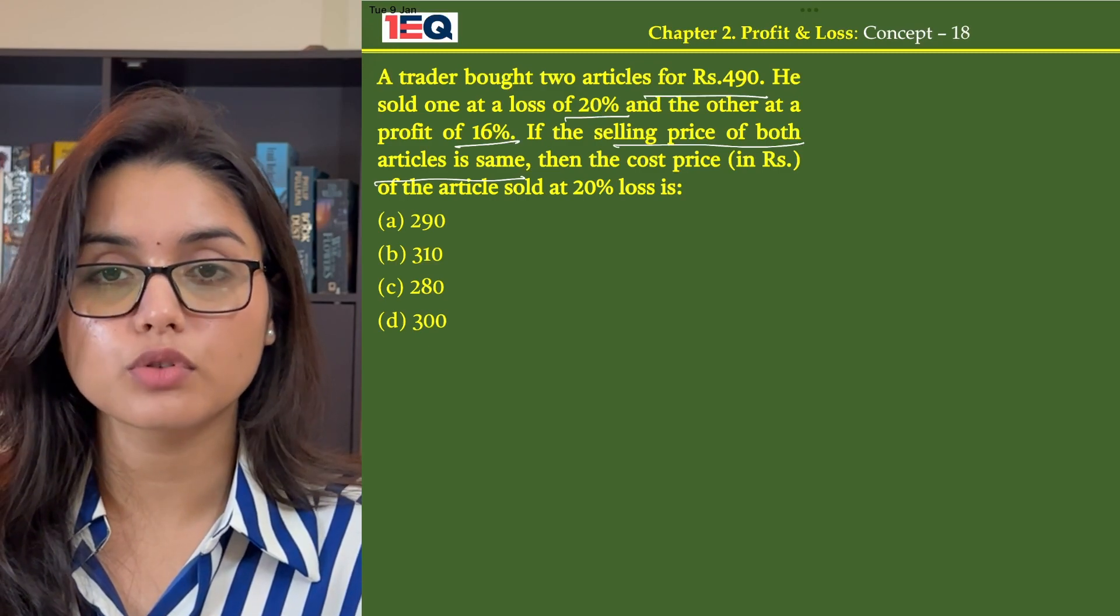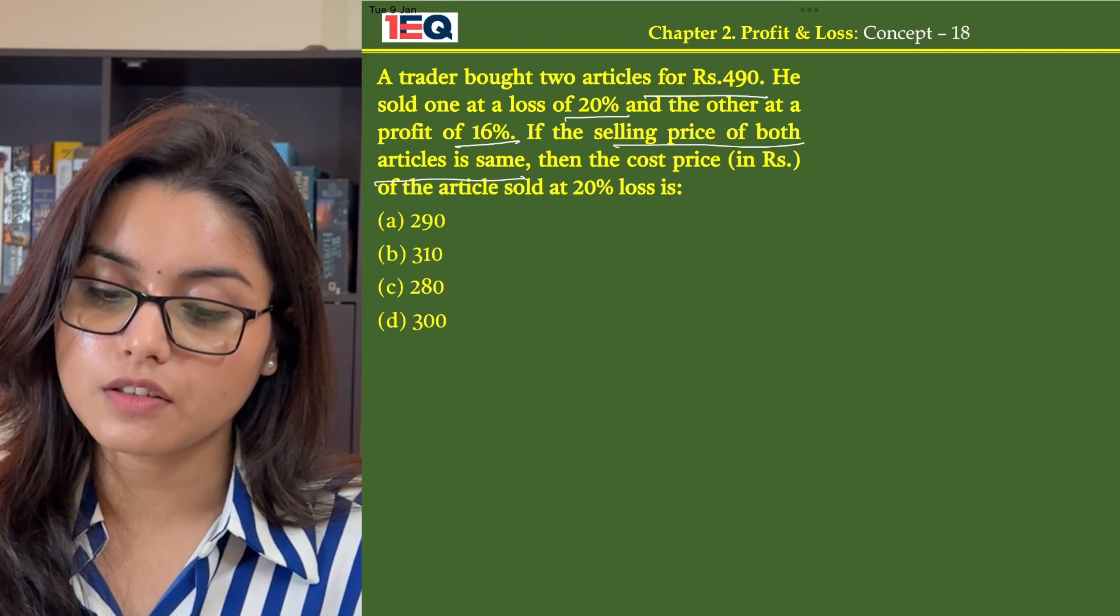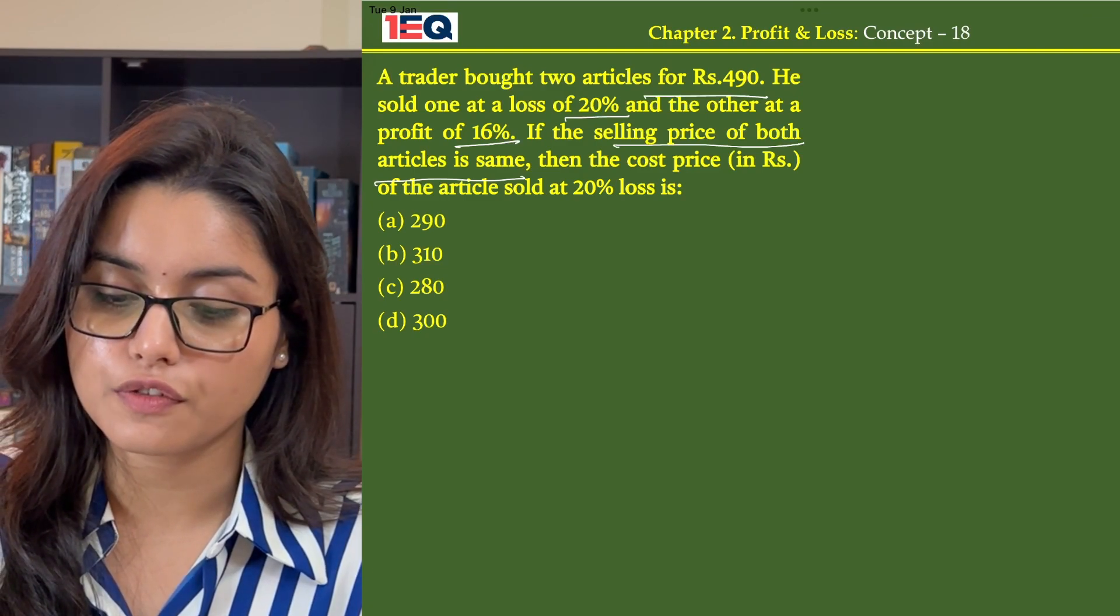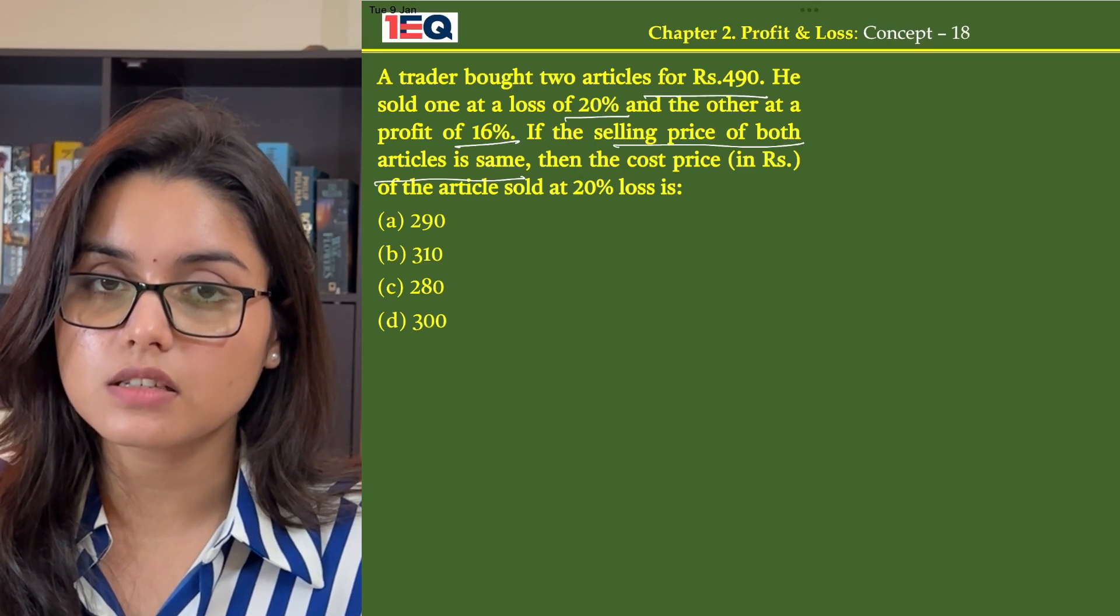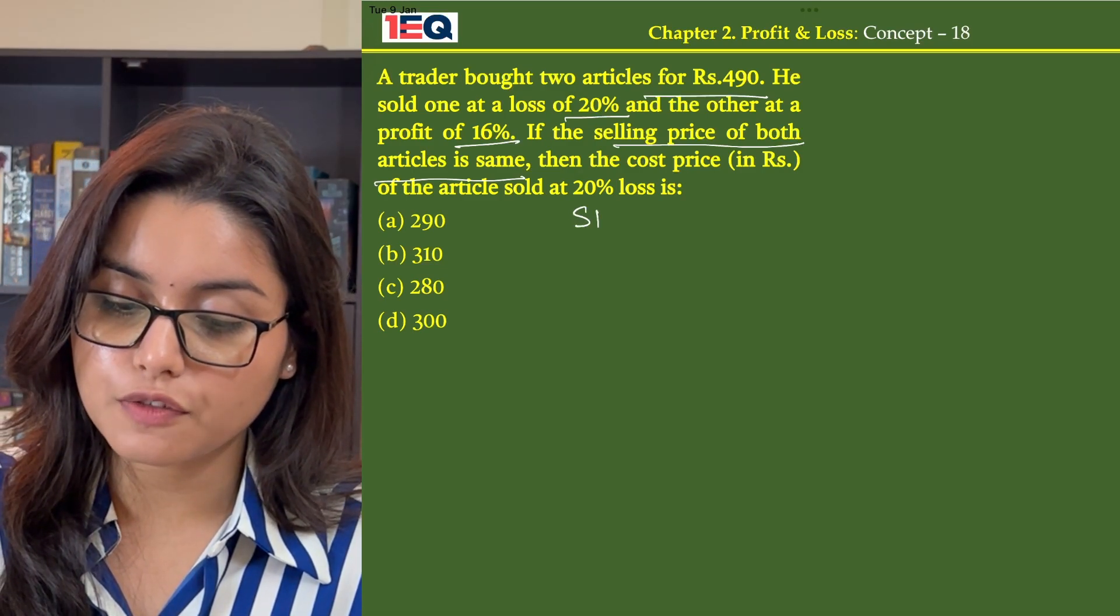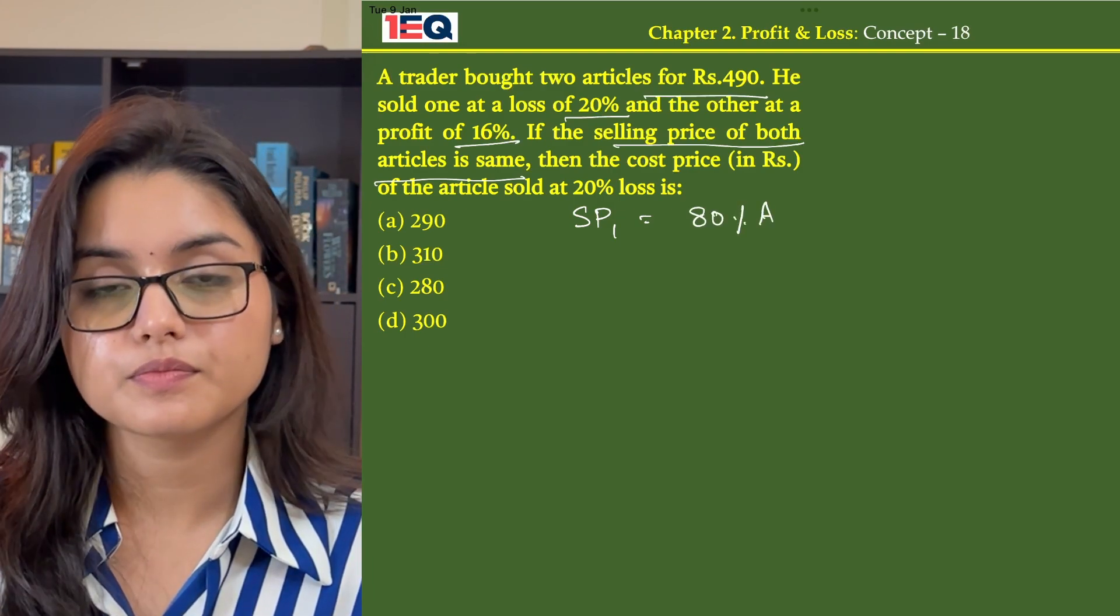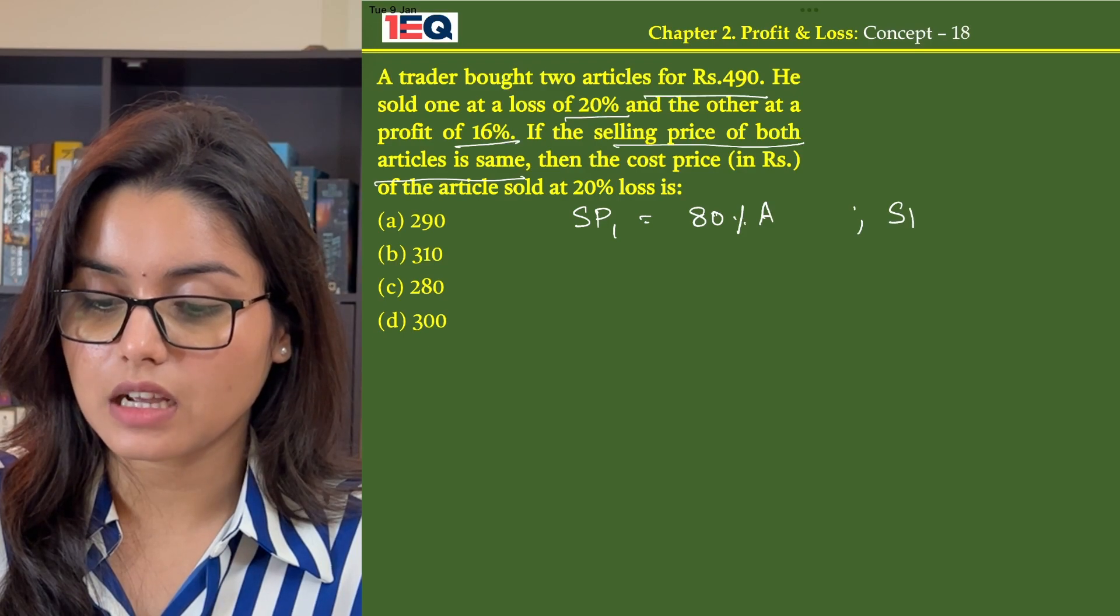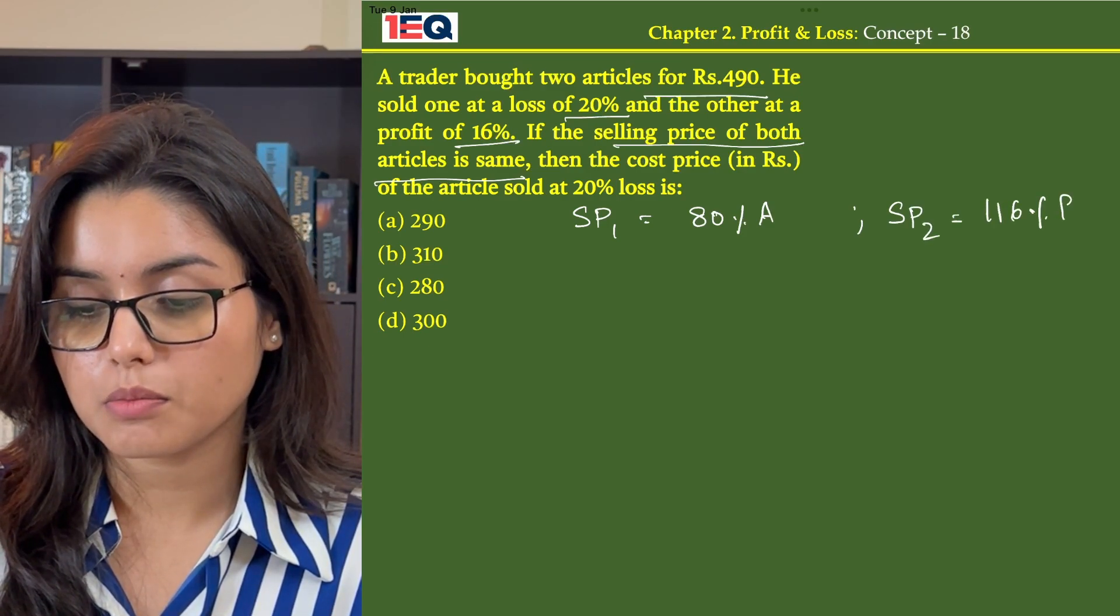So let the cost price of both the articles be A and B respectively. If he sells the first article at a loss of 20%, that means he sold it at 80%. So the selling price of first article will be 80% A and the selling price of second article will be 116% B.